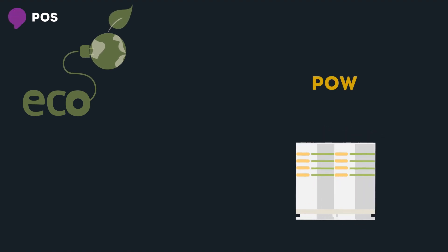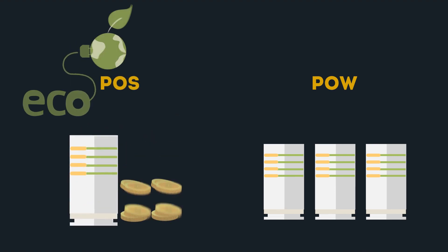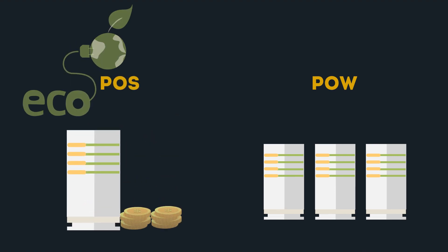In Bitcoin, validators known as miners compete to process a block of transactions and add it to the blockchain. POS: proof of stake — considered the greener alternative to POW. Where POW requires the prover to perform a certain amount of computational work, a proof of stake system requires the prover to show ownership of a certain amount of money or stake.